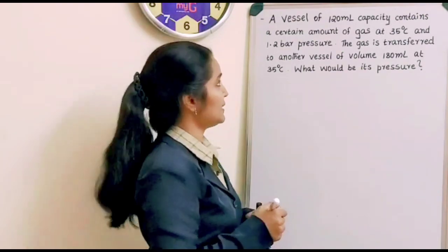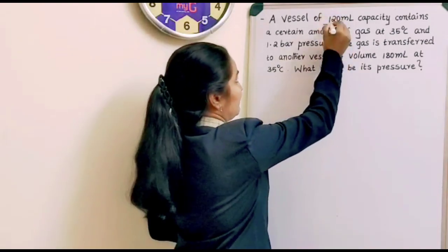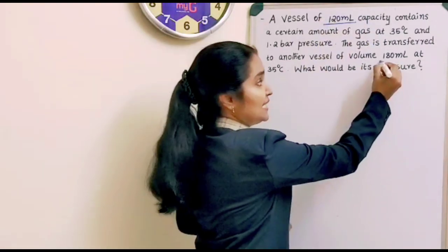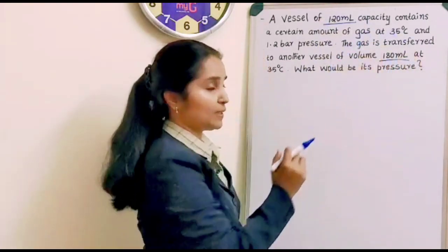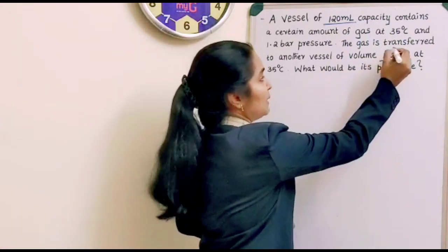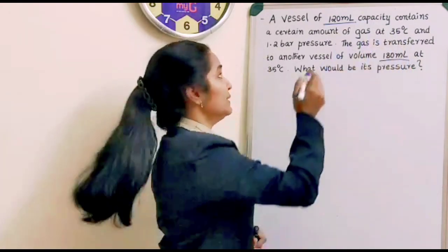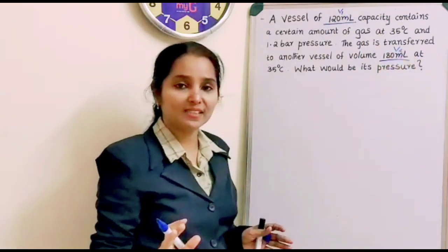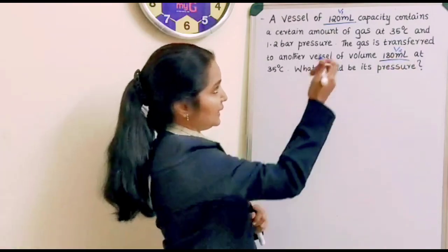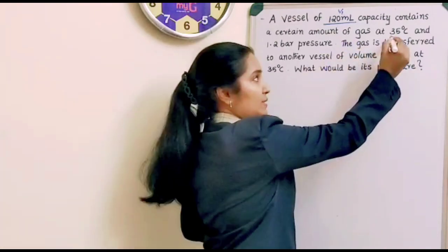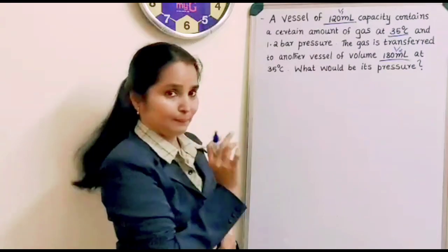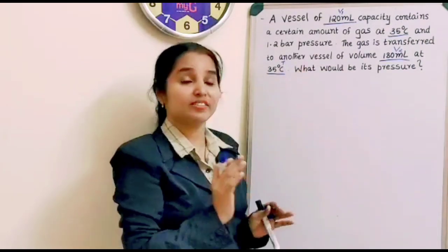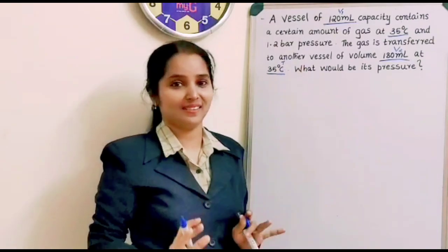So from the question you can see here, we have 120 ml volume given and that volume has changed at the second part of the vessel to 180 ml. So volume has changed. This is the initial volume and this is the final volume. And now in the initial phase temperature is 35 degree Celsius and in the final phase also temperature is 35 degree Celsius. That means temperature is kept constant.